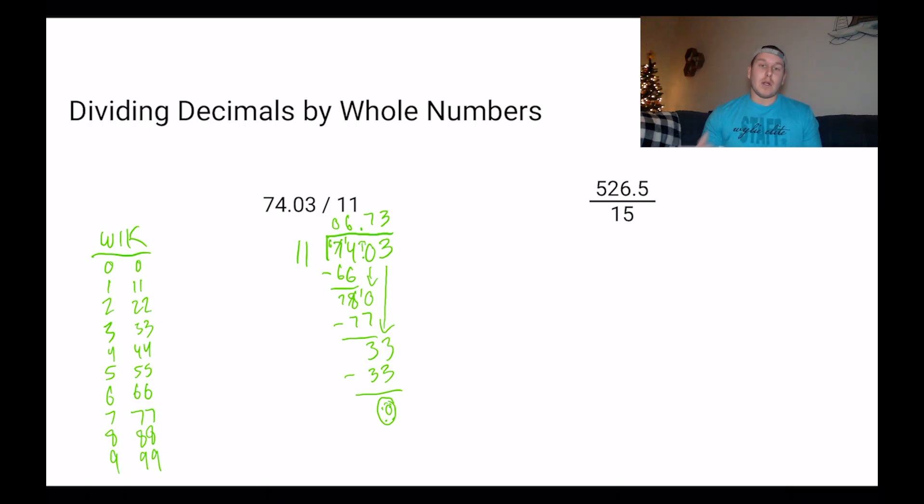But we're not finished yet. We can always check with inverse operations. So 6.73 times 11. This is going to be a really easy one because we're just going to kind of repeat the number that we have, placeholder zero because we're high quality students. Kind of copy down the next number. When we add those up, it looks like we're going to get a good answer. We're going to scoop two times because there's two numbers behind the decimal. So scoop, scoop, 74.03. That was the dividend we started with. So we have a good answer.